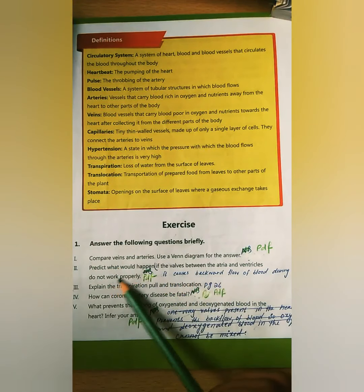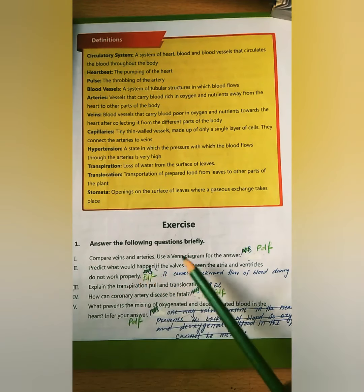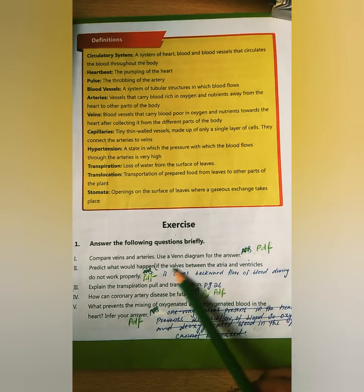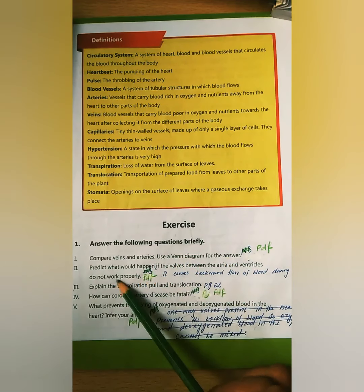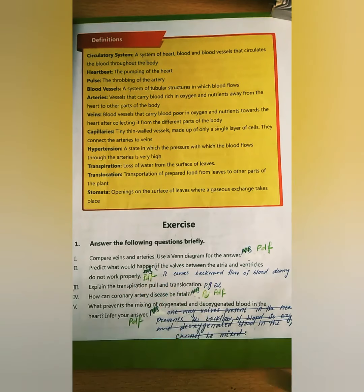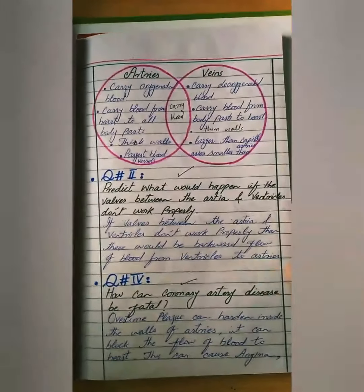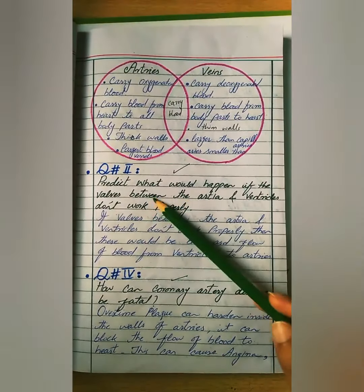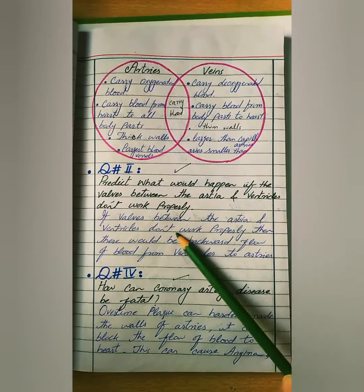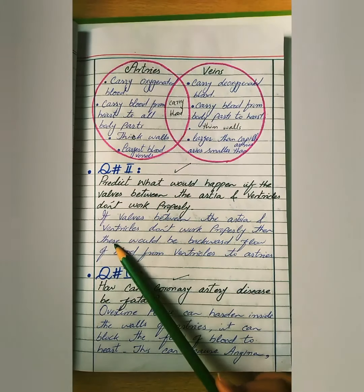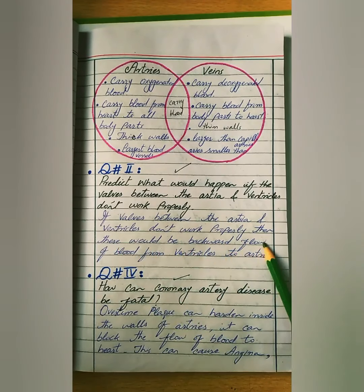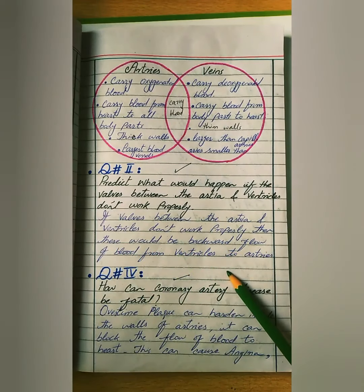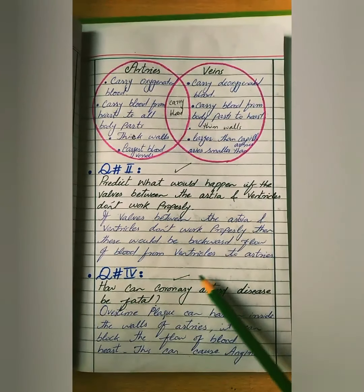Question number 2: Predict what would happen if the valves between the artery and ventricle do not work properly. The answer is: there would be backward flow of blood from the ventricles to the artery. If the valves do not work, there would be backward flow of blood.